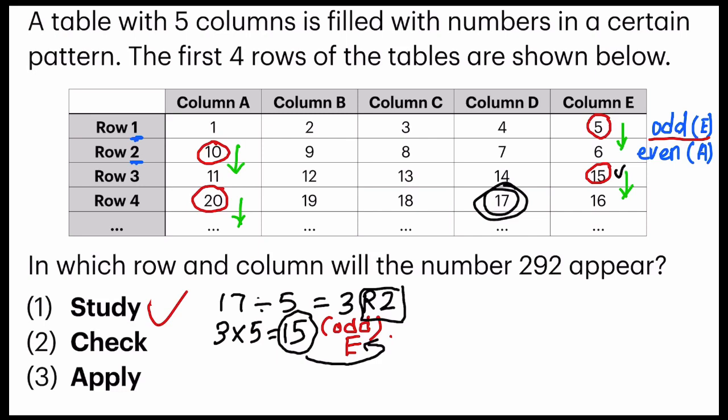So let's try it out with the question that's given. They want us to find 292. So relating to just now what I've done, the first step, I have to find the row number by dividing by 5. So I'm going to do it now. 292. I'm going to divide it by 5. I get 58R2.